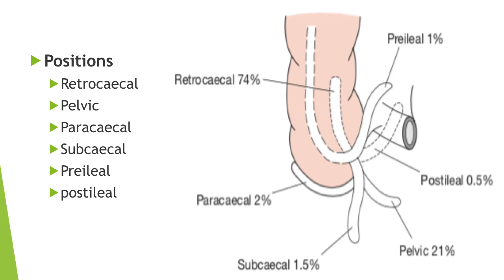Various positions of the appendix are categorized in the following locations. The commonest one is the retrocecal appendix, which lies posterior to the cecum and may be partially or totally extraperitoneal. The pelvic appendix has its tip lying in or toward the pelvis. The anatomic location of the appendix determines the presentation of symptoms and signs during an episode of appendicitis.